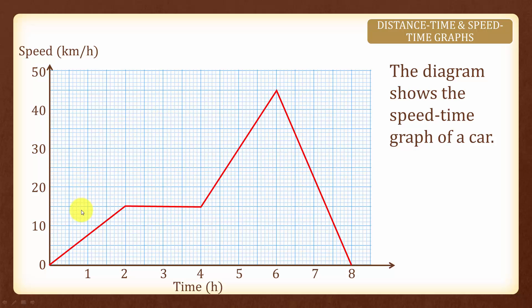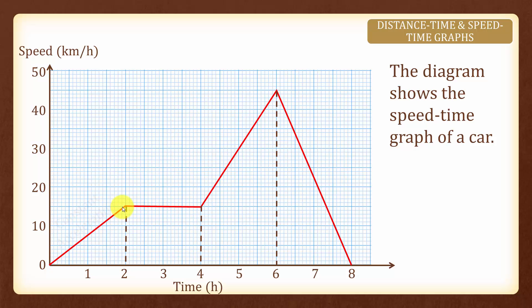Now let us interpret the speed time graph here. This diagram shows the speed time graph of a car. Under the speed time graph, what do you think this upward sloping line means? This is the change in speed over the change in time. Therefore, this part of the graph means that the car is travelling at constant acceleration.